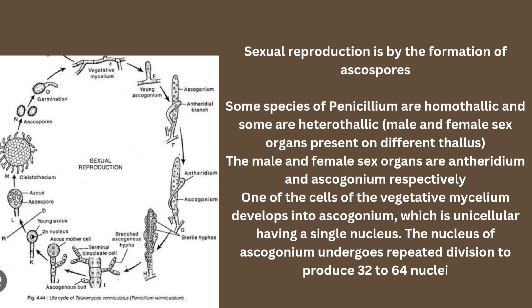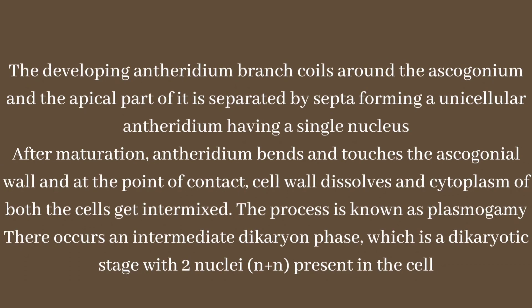The nucleus of the ascogonium starts to divide and produces 32 to 64 nuclei. The antheridium, which is the male sex organ and contains a single nucleus, bends and makes contact with the ascogonial wall. As it matures, the antheridium bends and the ascogonial wall starts to dissolve through enzyme action.